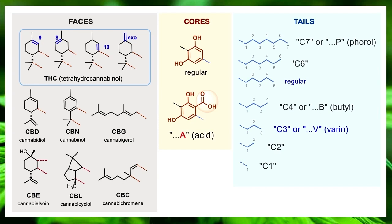There are just two cores: one that we call regular or neutral, and one that we call acid. Chemically, we add a carboxylic acid functional group — shown in orange. When a cannabinoid molecule has that, we put an A at the end of it. The process of decarboxylation is removing that group, which happens naturally when you heat a molecule — the acid falls off and you lose the A.